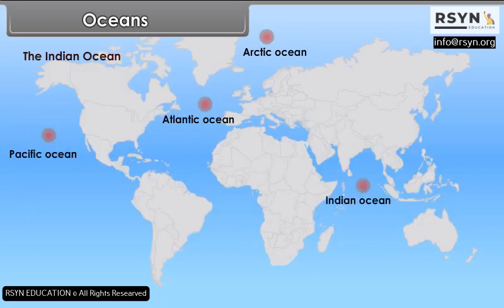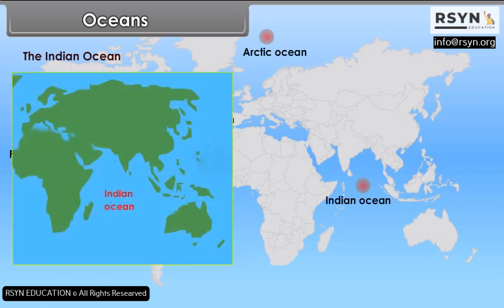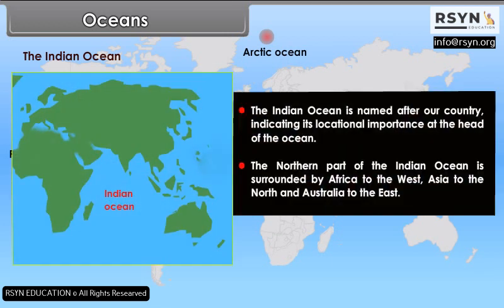The Indian Ocean is named after our country, indicating its locational importance at the head of the ocean. The northern part of the Indian Ocean is surrounded by Africa to the west, Asia to the north, and Australia to the east.